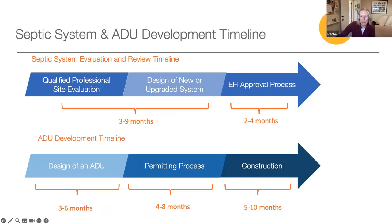The timeline. We think it's important to share this estimated timeline so you can better understand the investment in time required when thinking about a potential project of this size. Conservatively speaking, the time to evaluate, design, and approve a new septic system — and then subsequently the timeline for designing, permitting, and constructing the ADU — can be three years. Be aware that timing is contingent on the availability of busy professionals in a very active construction industry. Also note that the timeline for permitting can fluctuate seasonally, as some times of the year see far more applications than others.